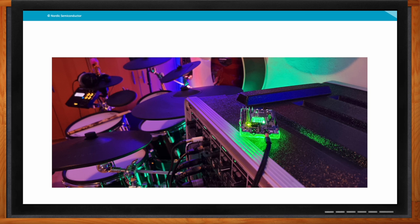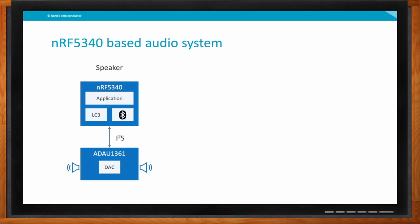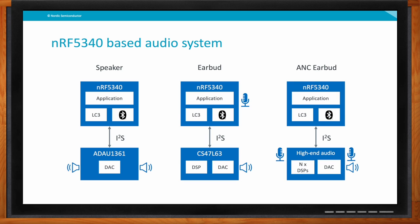If I was going to use the NRF5340 in an LE audio application, what would it look like? There are three different examples. As a speaker, you would take the 5340, run the codec on the main processor, Bluetooth on the ultra-low power network processor, and connect it to an audio DSP — such as an Analog Devices DSP that's supported in Zephyr. As an earbud, it's similar but with a microphone connected, using the Cirrus Logic audio DSP on the board to directly drive your headphone load. For an advanced active noise-canceling earbud, you need a higher-end audio DSP that can take multiple microphone inputs and run the noise-canceling algorithms on the application processor.